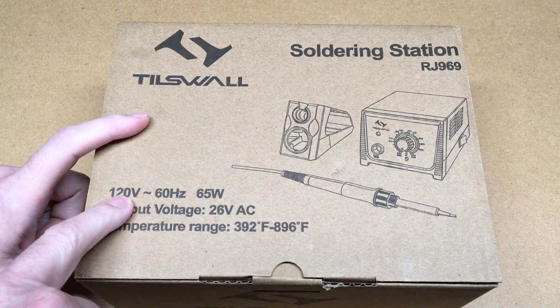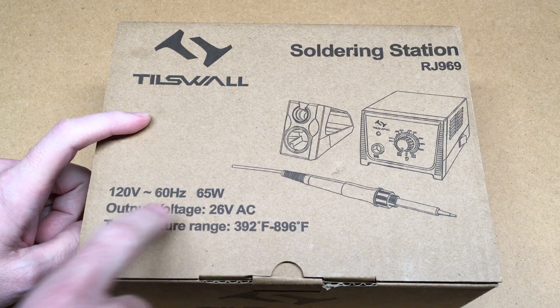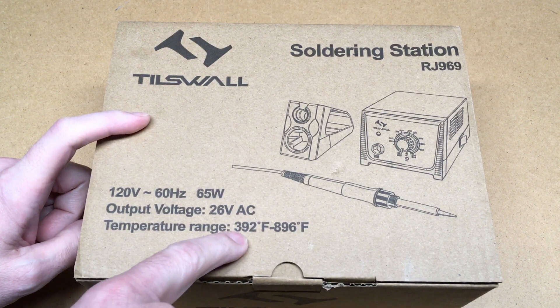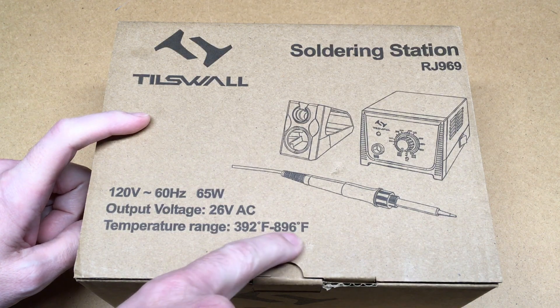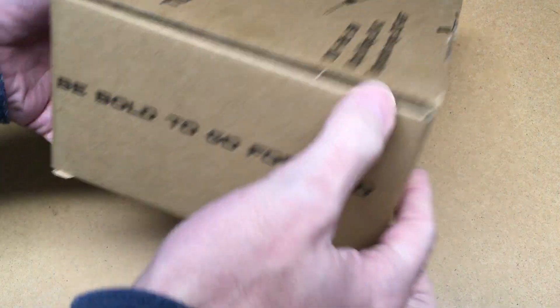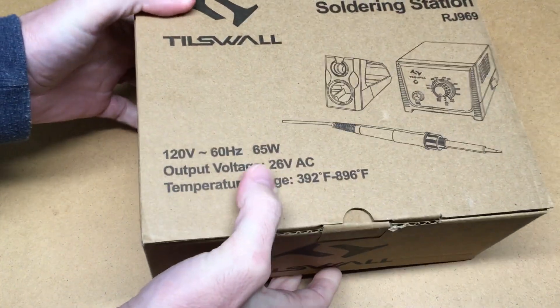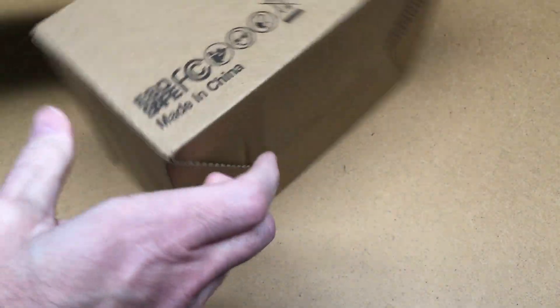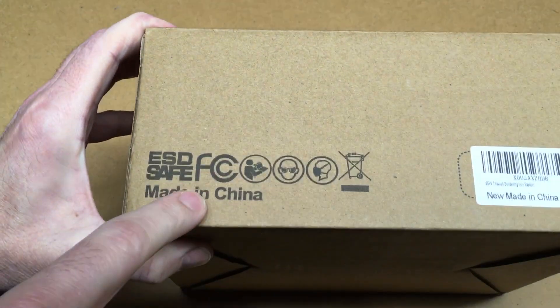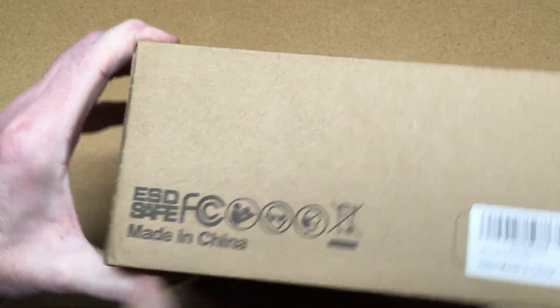This says it's 120 volts at 60 Hertz, 65 watts. The output voltage is 26 volts AC and the temperature range is 392 to 896 degrees Fahrenheit. The side says 'be bold, go forward.' On the back it says ESD (electrostatic discharge safe), FCC, and some other things.